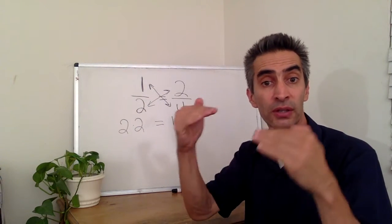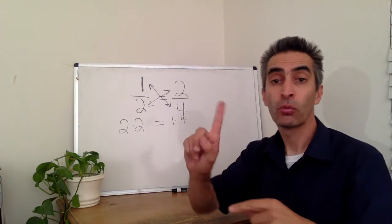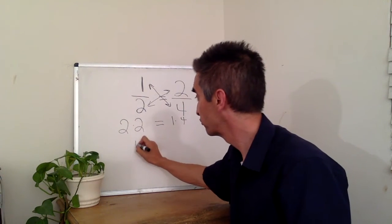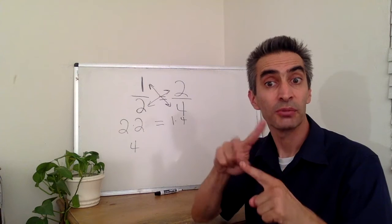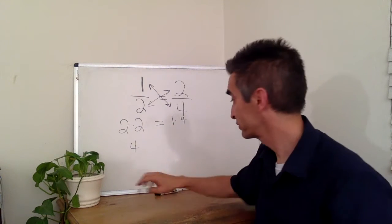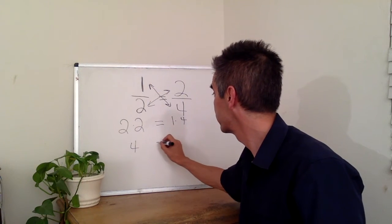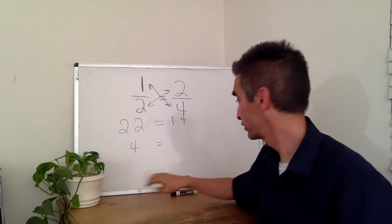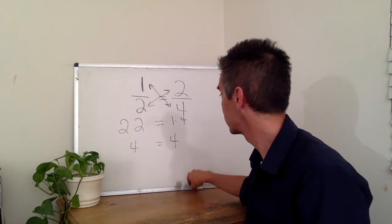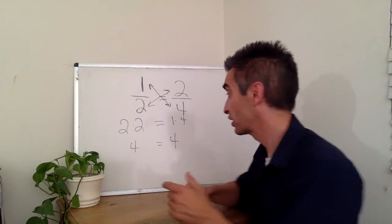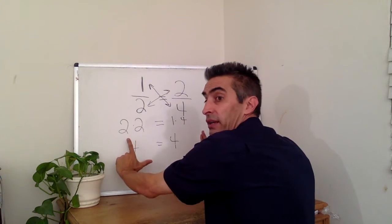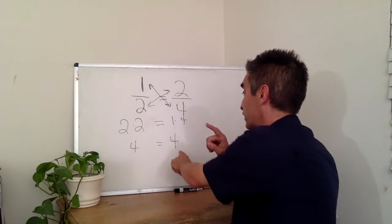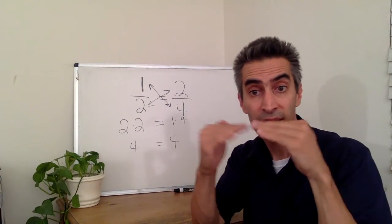Two times two equals one times four. Two times two equals four. And one times four equals four. Notice, the left side and the right side are equal. Four on the left and the four on the right are equal.